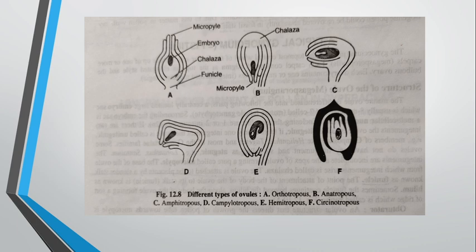The third type is amphitropous, where the ovule shows a curvature — it is a horseshoe-shaped ovule. This is the characteristic feature of the amphitropous type.